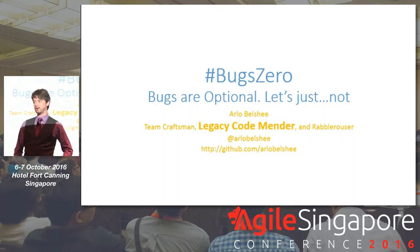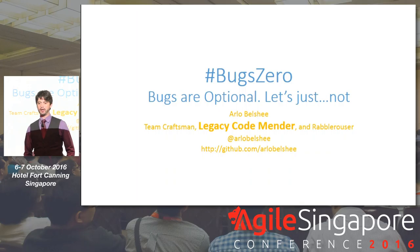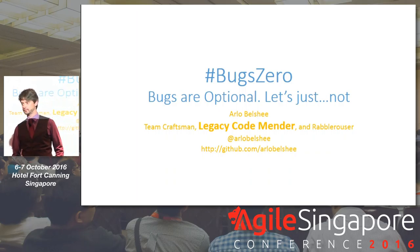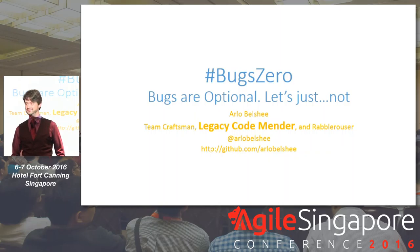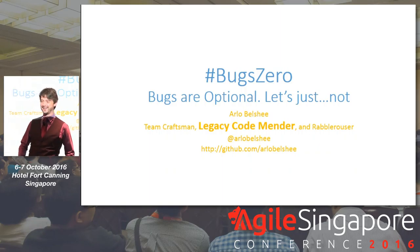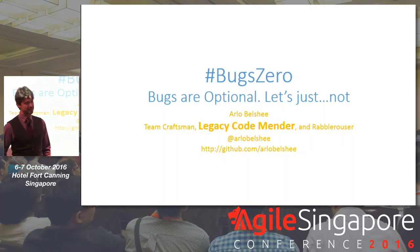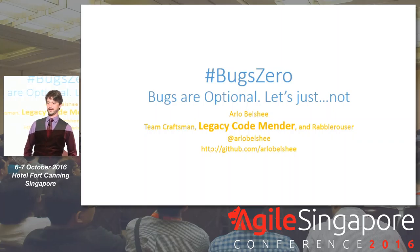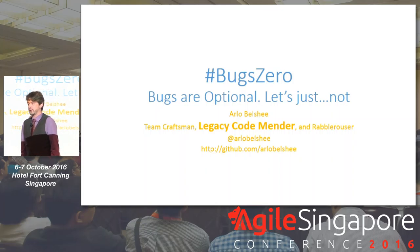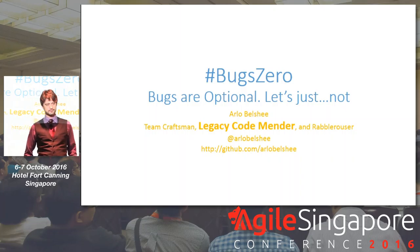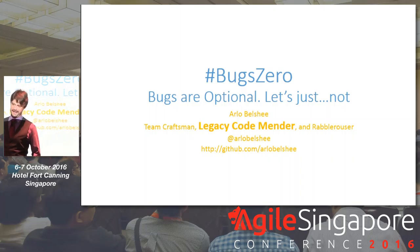What if I'm running an ad campaign and I change the look of a button and I get half as many clicks on it as I did before? Is that a bug? I just cut my revenue in half. It depends on whether it's in the requirements — but that seems like blame shifting. It's a bug if I screwed it up, but not if you didn't put it in the requirements. Did it change the amount of revenue the company made whether it was in the requirements or not?